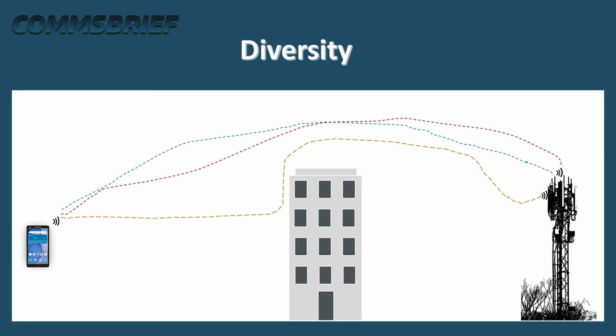Diversity is not a new concept in mobile telecoms and has been used for years to address the negative impact of signal fading. When a radio signal — for example, a mobile signal — travels from the base station to the receiver of a mobile phone and back, it can take many routes depending on the obstructions in its way. Obstructions can be things like buildings, trees, poles, mountains, etc. When the signal encounters any obstructions, it can get scattered and become weak or fade when it reaches the receiver.